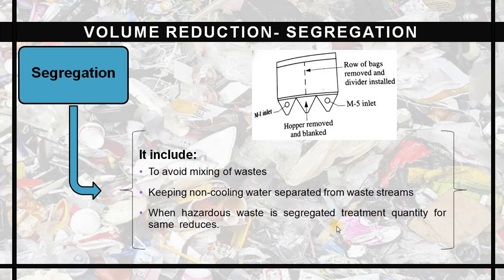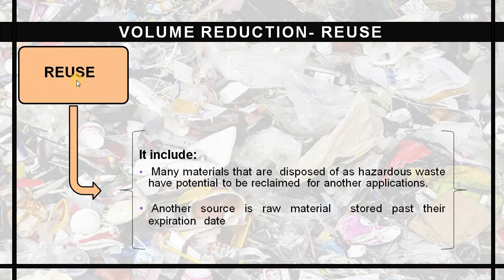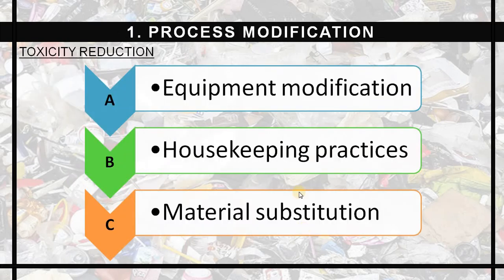Segregation will ultimately reduce the load on the treatment plant and also reduce the quantity of waste generated. Reuse means using the material multiple times, which will also reduce waste. Now coming to process modification for toxicity reduction, it includes first equipment modification, second housekeeping practices, and third material substitution.